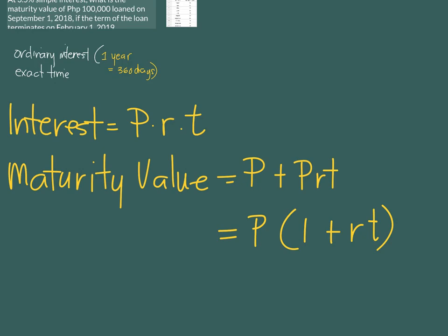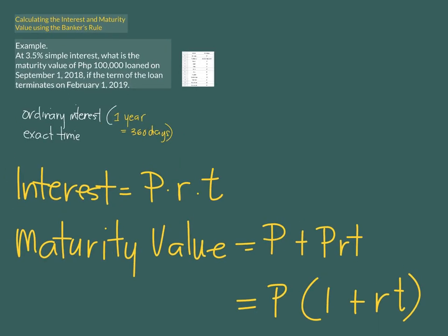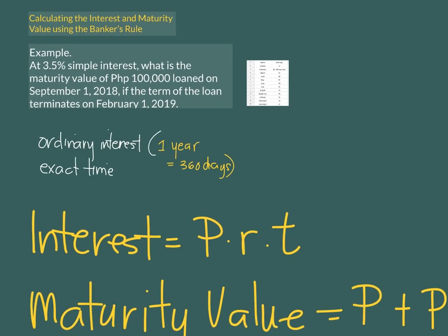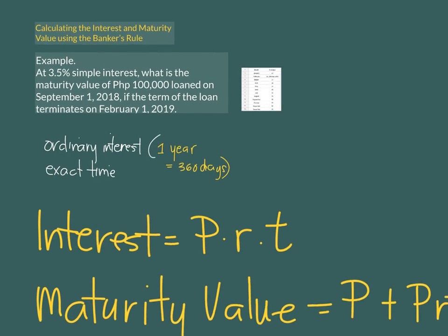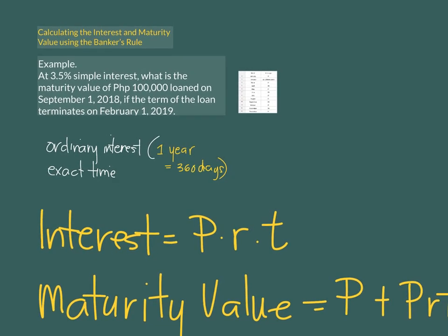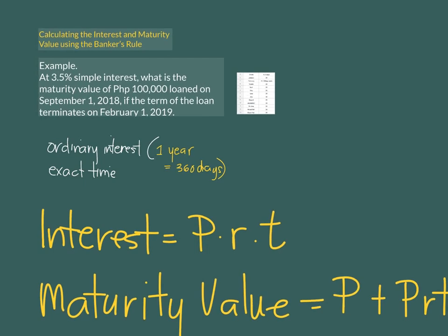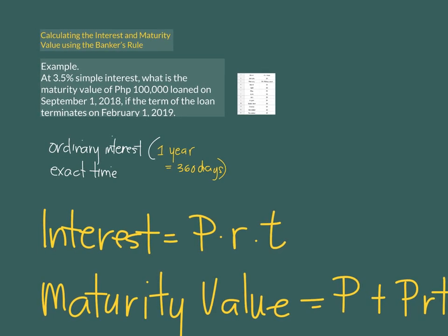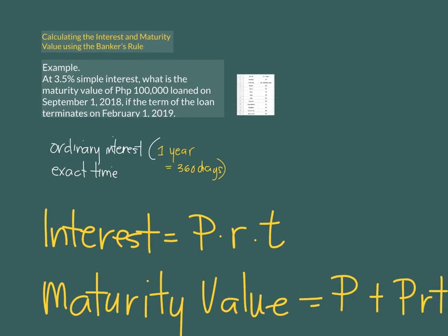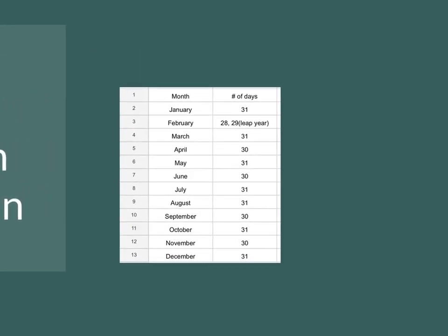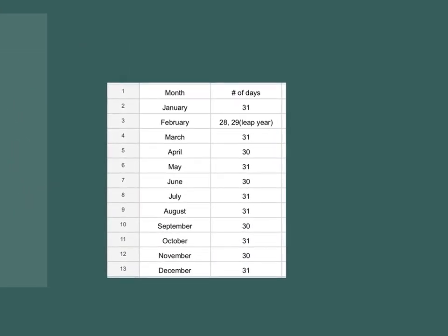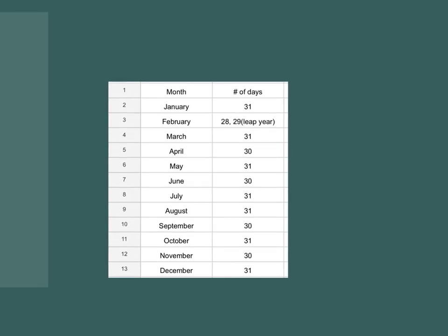So it's the same interest formula. Let me show you how the banker's rule is applied. Let's consider our information: P is 100,000, R is 3.5% or 0.035, and then we need to know the duration of time from September 1, 2018 to February 1, 2019. We will be using a list as a guide to count how many days from September 1, 2018 up to February 1, 2019.